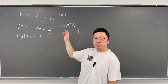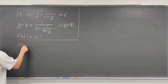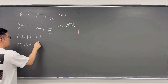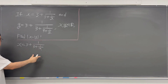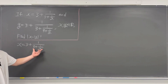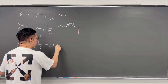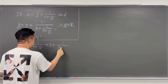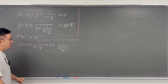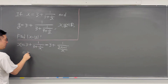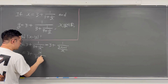So let's work on the x part first. x is equal to 3 plus 1 over 3 plus 1 over x. For this fraction, we can combine these two terms in the denominator. So this is the same as 3 plus 1 over 3x plus 1 over x, which is the same as 3 plus x over 3x plus 1.